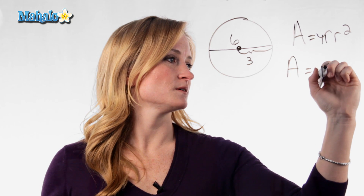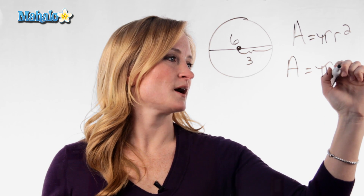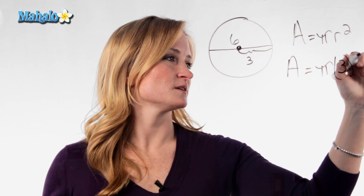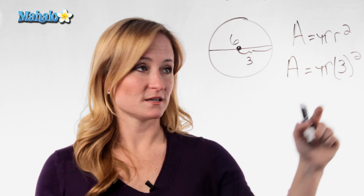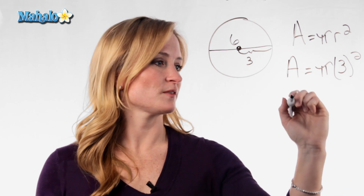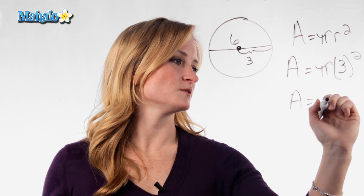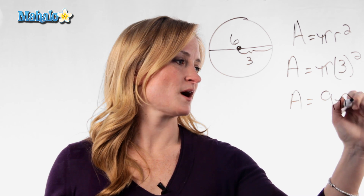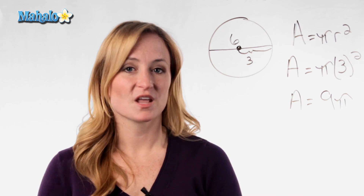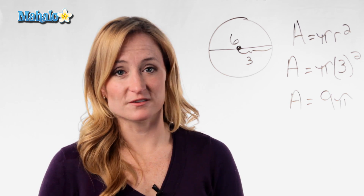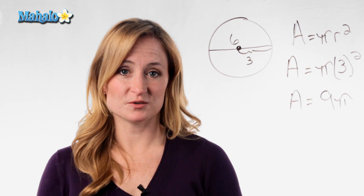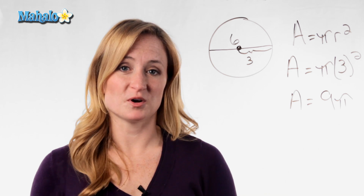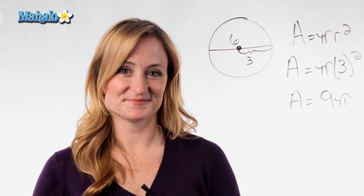So A equals pi times 3 squared. You need to make sure you square that 3. So A equals 9 times pi. You're going to want to find out if your instructor wants you to use pi in your answer or if they want you to multiply it out.